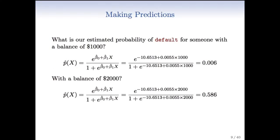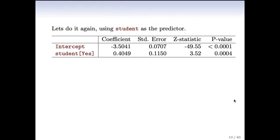What if they've got a credit card balance of $2,000? That means they owe $2,000 rather than $1,000. Well, if we go through the same procedure, now the probability has jumped up to 0.586. So it's got much higher. And you can imagine if we put in $3,000, we'd get even higher.